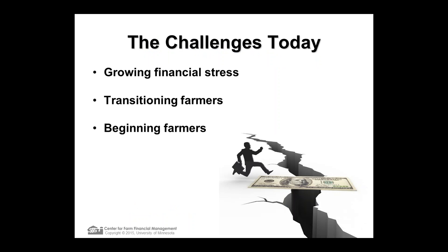Some of the hot topics right now are the growing financial stress. We've come out of probably the best seven or eight years of agriculture that we've experienced in anyone's lifetime, at least in the U.S. In Australia, there was drought during some of those good years, so you didn't necessarily get to participate in all the benefits. But in the U.S., for crops at least, we've had the highest commodity prices with generally good yields, so we've had record profitability in agriculture.